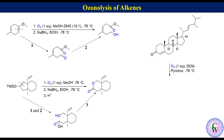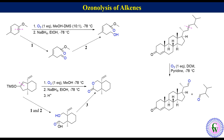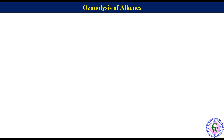One more example on regioselectivity: the substrate has an alpha-beta unsaturated alkene and an alkene in the side chain. The alkene in the side chain is more reactive, so the reaction will selectively go on the side chain alkene to produce two aldehydes.